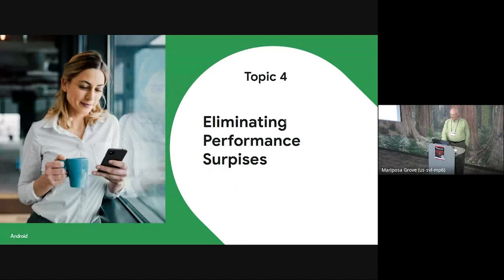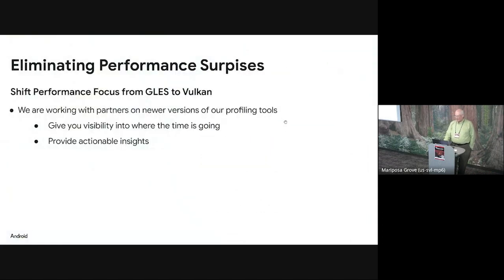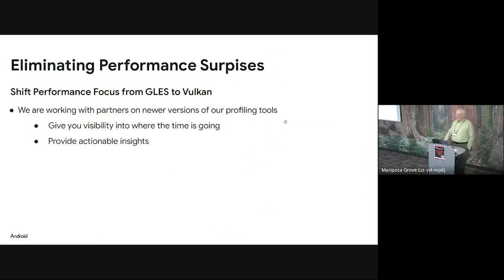Eliminating performance surprises — don't you hate it when everything works great and then you try a different piece of hardware and suddenly it runs dog slow? One problem is that for years hardware providers have tuned to old benchmarks like Manhattan, which has been around forever and is based on OpenGL. We want to have new Vulkan-based benchmarks, and there are some, but we'd like more, focusing everybody on Vulkan so that Vulkan is successful.